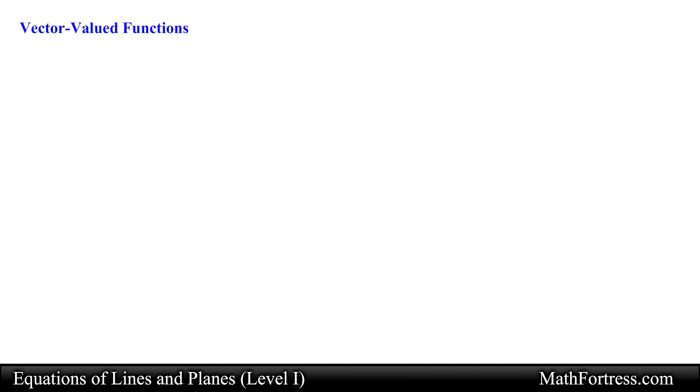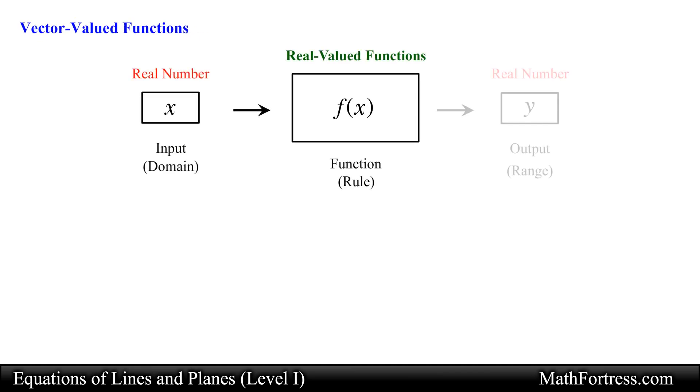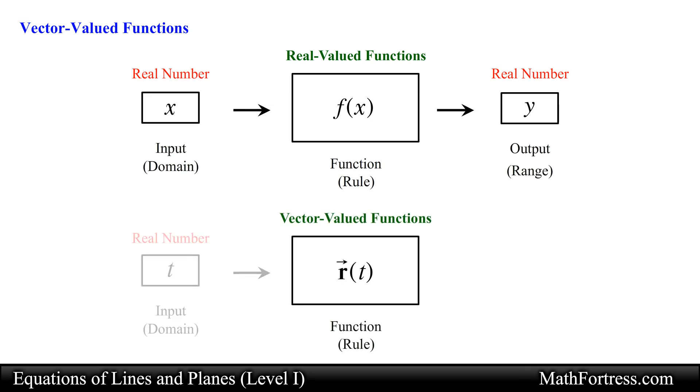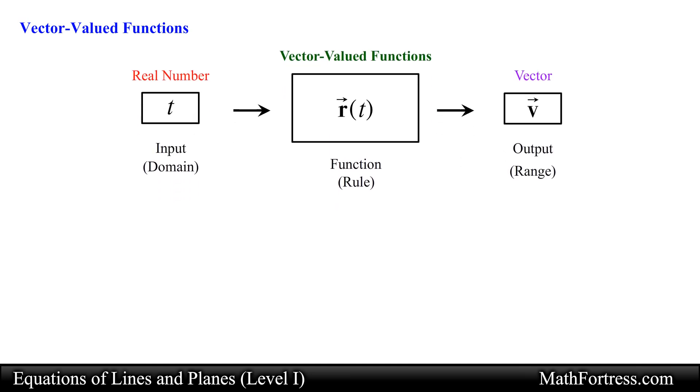In general, a function is a rule that assigns an element in the domain to an element in the range. These types of functions are said to be real-valued functions. A vector-valued function or vector function is simply a function whose domain is a set of real numbers and whose range is a set of vectors. Such functions are needed to describe curves and surfaces in space.